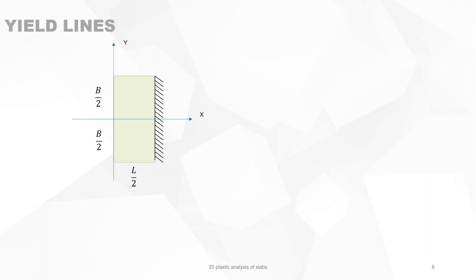A concrete slab with yield lines drawn can be divided into sub-regions of rectangles and triangles. Taking the case of a rectangle rotating about its rotation axis at angle theta, it will have a maximum displacement delta zero at the end. The external energy expended is the double integral of load times displacement delta. Assuming Q is uniform — independent of x and y — we want the mean displacement of the slab, which is the total load times mean displacement.